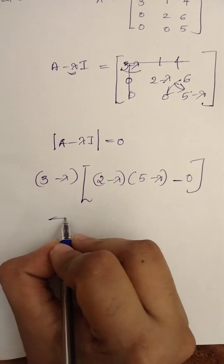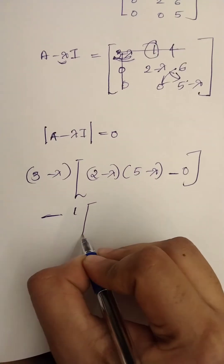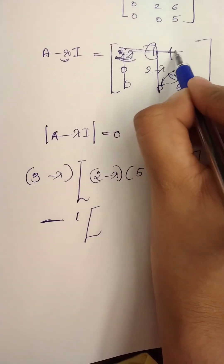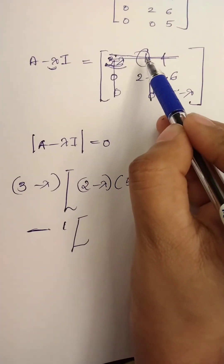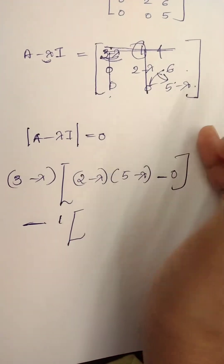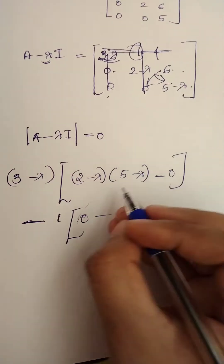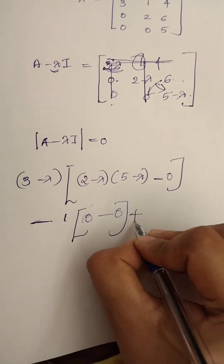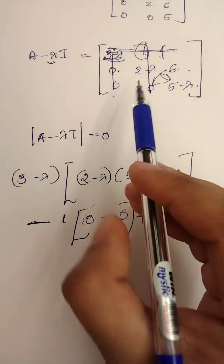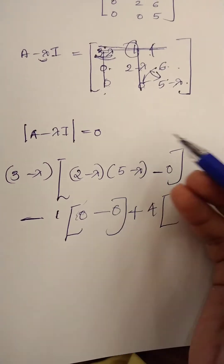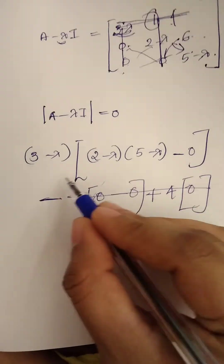Continuing the expansion: the next element involves 0 into 5 minus lambda minus 0 into 6, which is 0 — so we don't care about that term. The third element is 4, and the cross multiply gives 0 into 2 minus lambda, which also equals 0. So the first section simplifies.